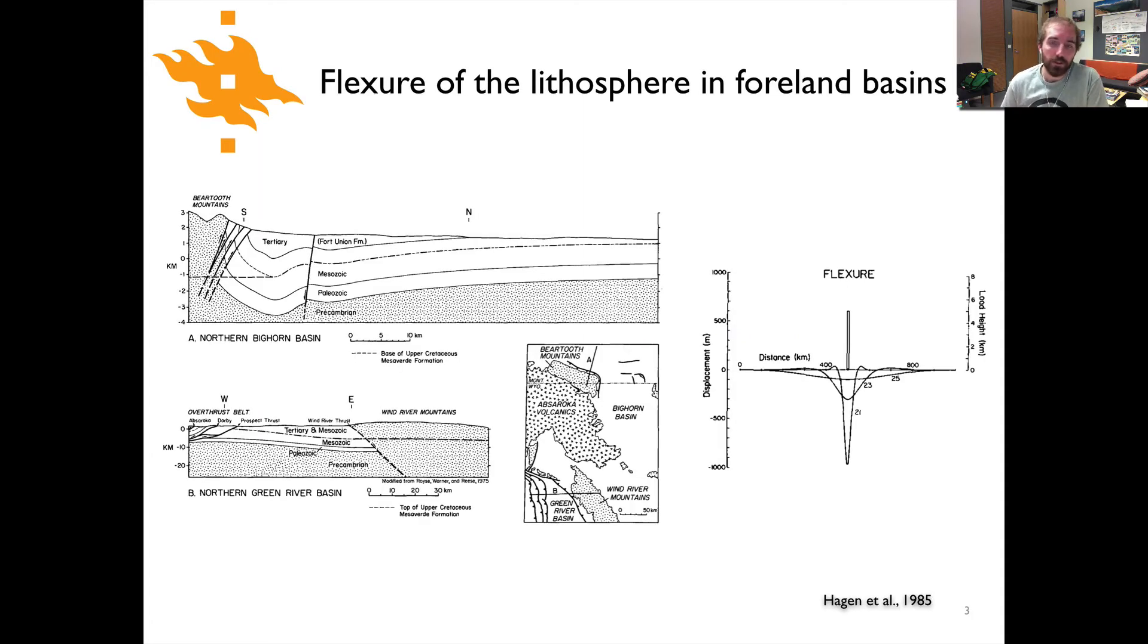We've already seen this slide in one of the lectures from the previous set, and that is the example of flexure of the lithosphere in the Foreland Basin setting. This is adjacent to two mountain ranges that were uplifted back when the Rocky Mountains in the western U.S. were being constructed.